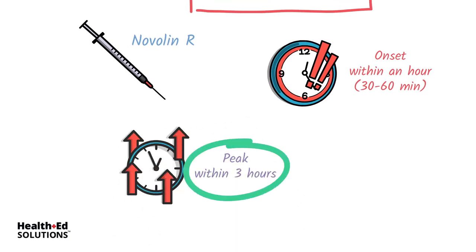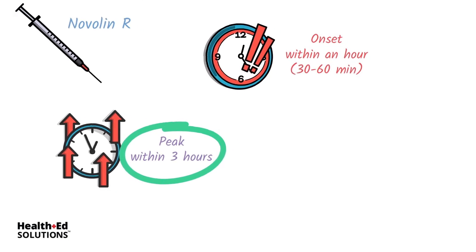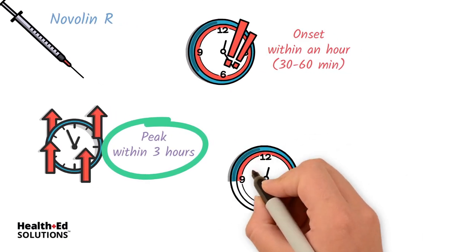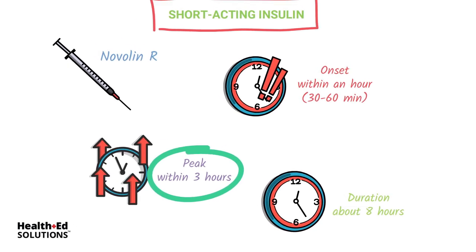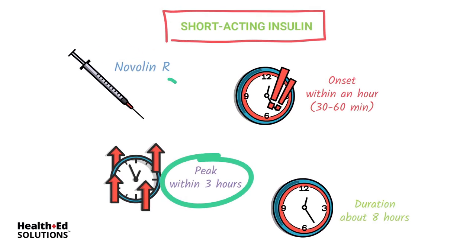The short acting peaks within about three hours, and then within about eight hours it is out of the patient's system. So your rapid and your short acting do their job and are out of the system within eight hours. That is your Novolin R, or regular insulin.